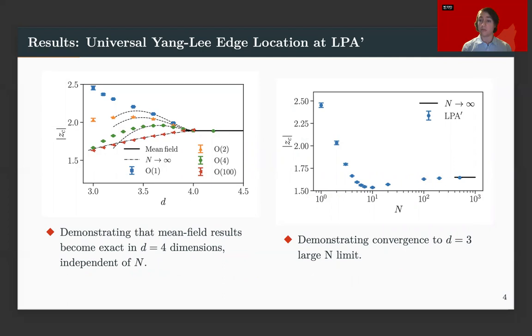So then on the right, I have zc versus N, where these are all 3D values. So 3D zcs. And the leftmost is Ising. We see that from Ising, it decreases and it dips below the large N limit in a novel way and approaches the larger limit from underneath.